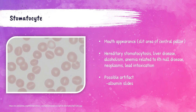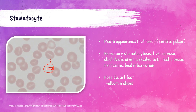These red blood cells are called stomatocytes. They kind of look like they have a slit-like or mouth-like appearance to their central pallor. These cells are seen in patients with hereditary stomatocytosis, those with liver disease and alcoholism, and patients with Rh null disease — which you'll learn about in blood banking — where patients have a lack of expression of all Rh antigens.